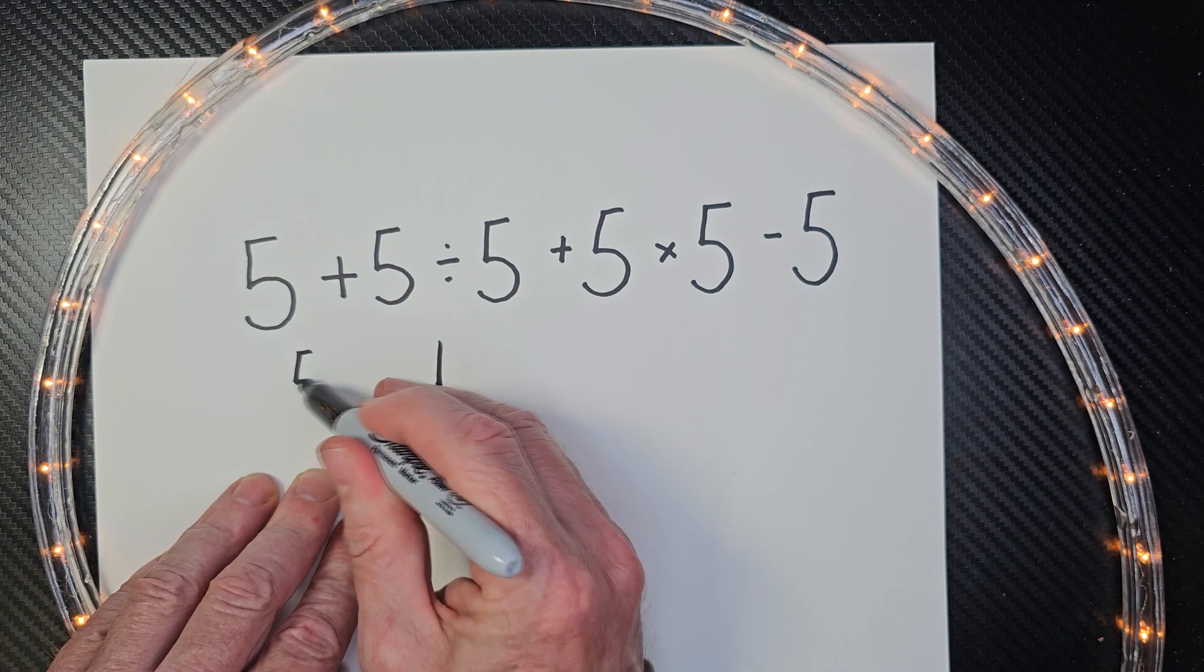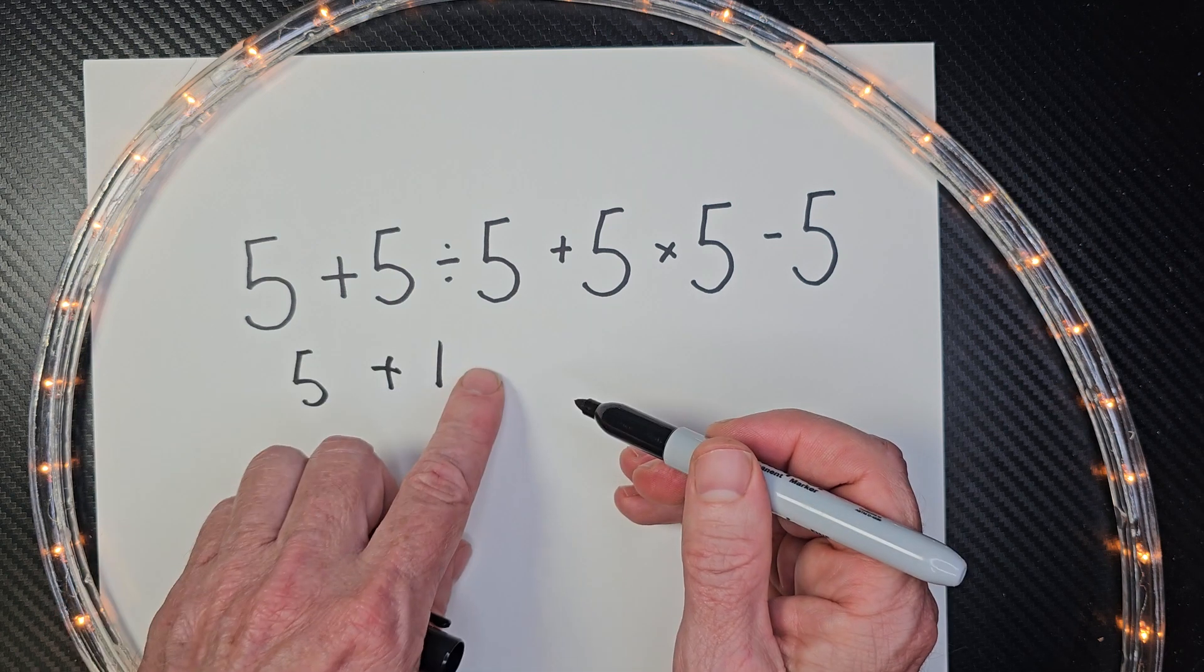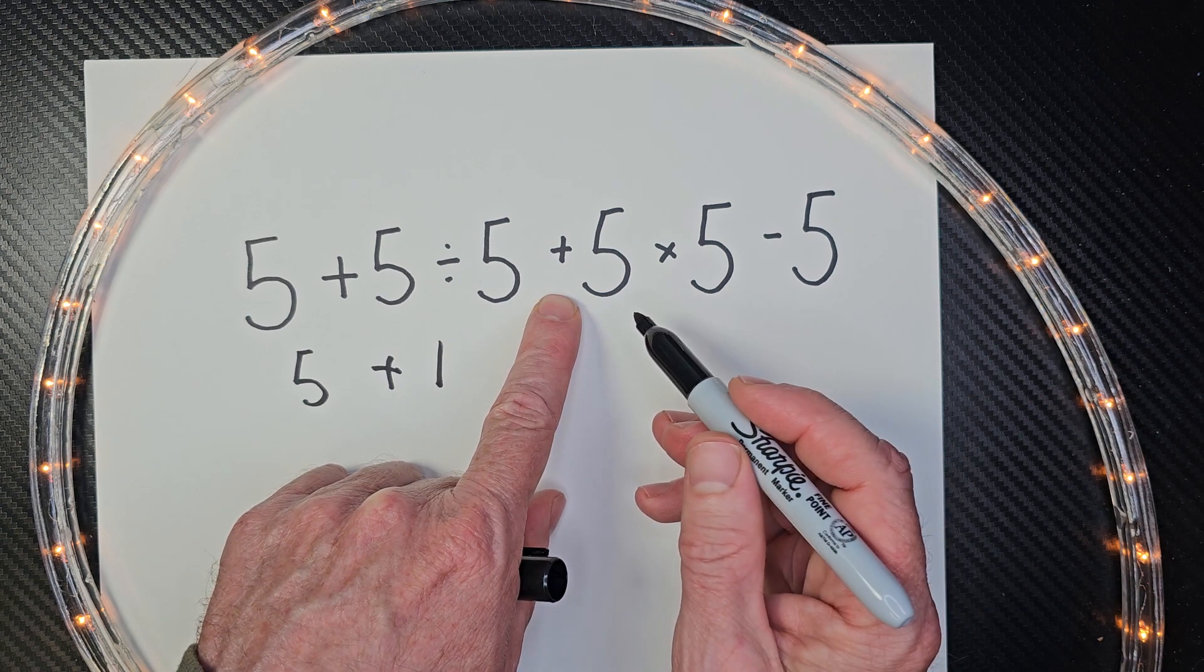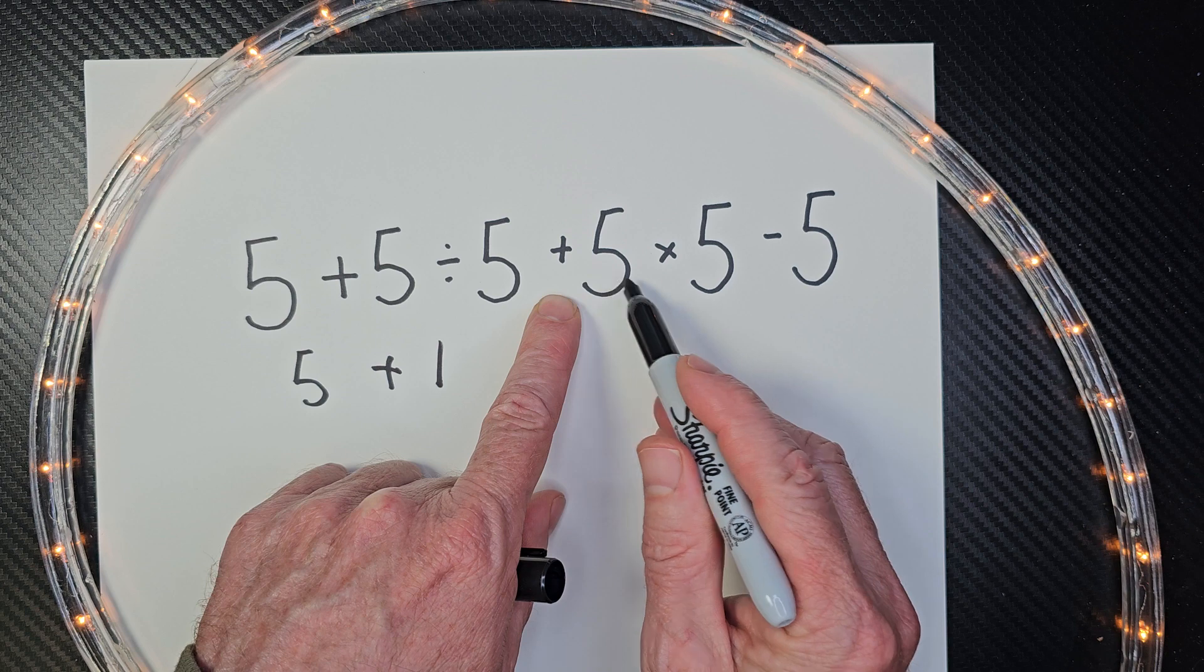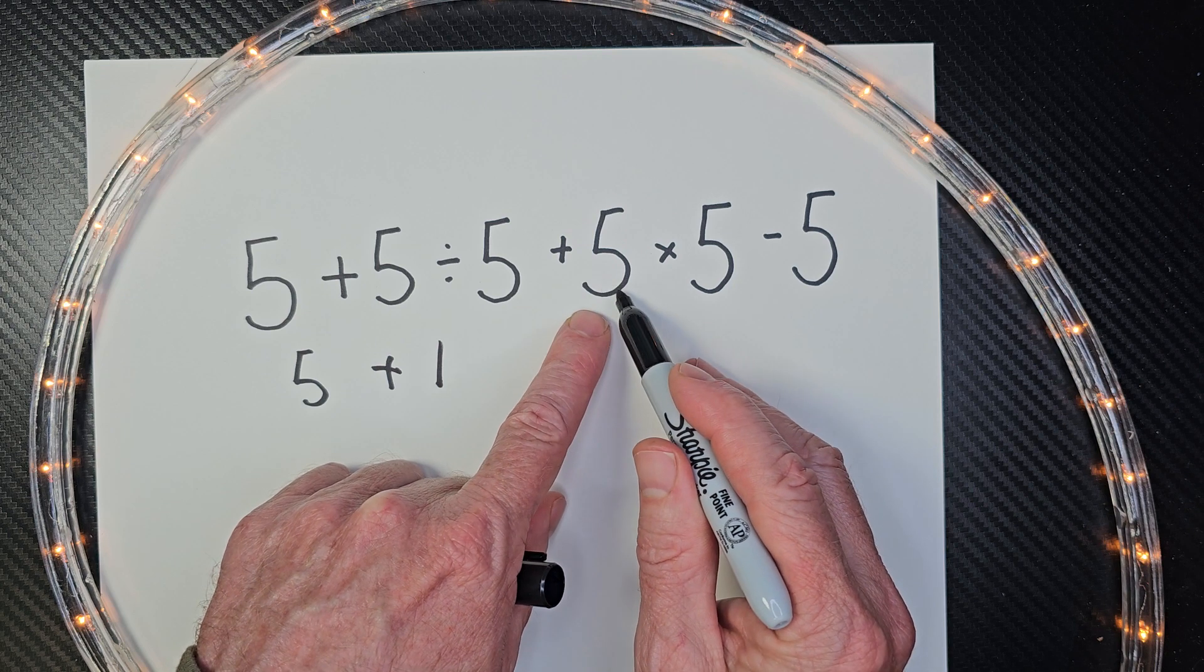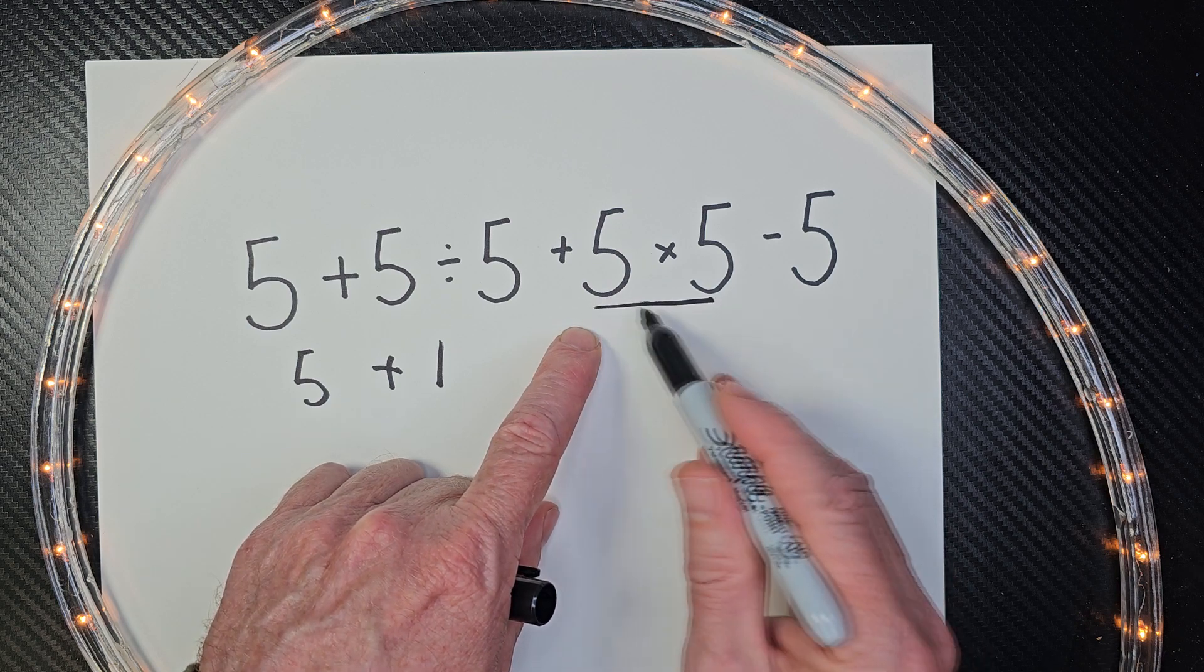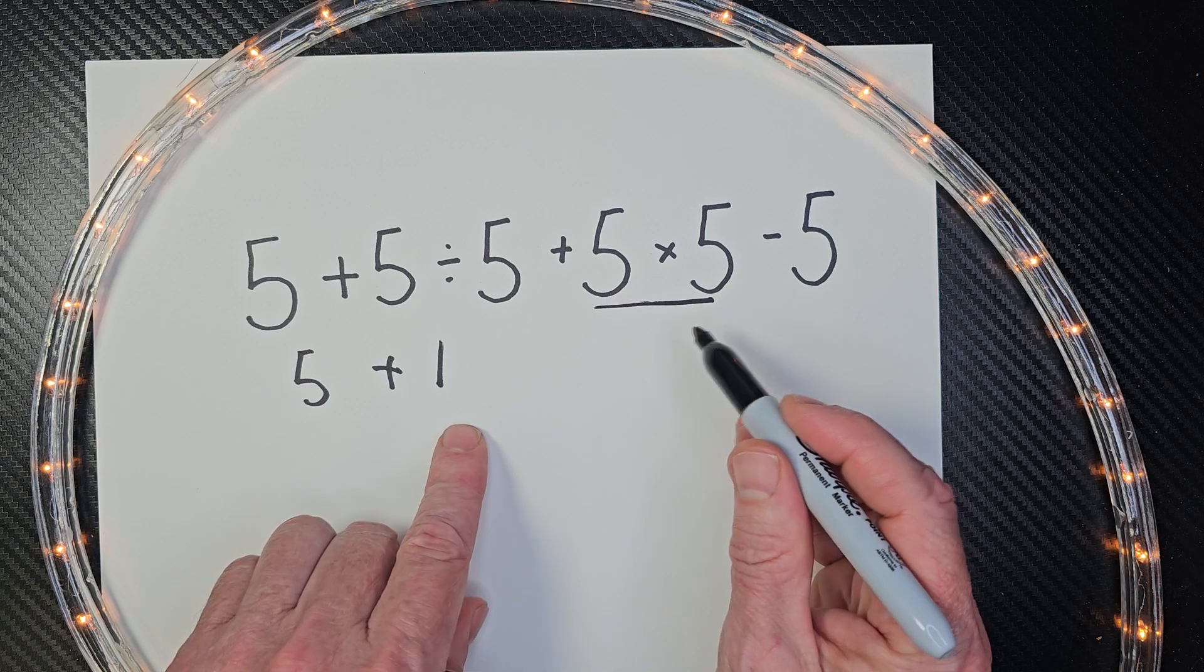All right, so I can even go like this. 5 plus 1 plus, now don't catch that trap right here. It's plus 5? No, it's plus, and then it's 5 times 5. We need to do this part here first. So 5 times 5 would be 25.